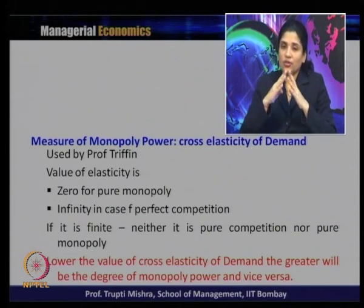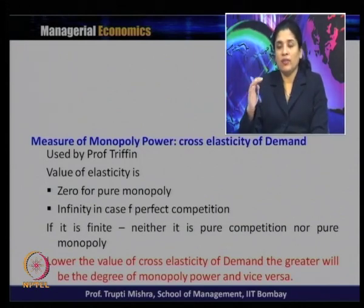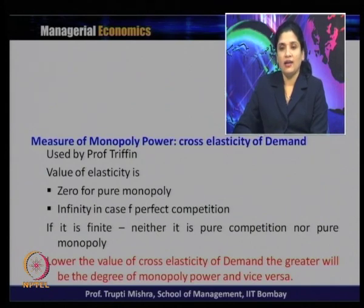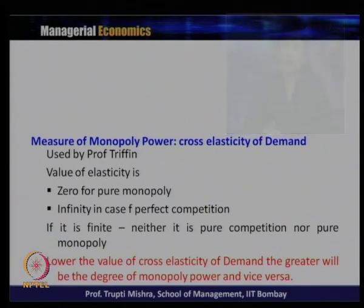With cross elasticity of demand: if it is 0, there is no close substitute at all — pure monopoly; if it is infinite, all products in the market are close substitutes — perfect competition. If it is finite, the market is between these two extremes. Lower the value of cross elasticity of demand, greater the degree of monopoly power, and vice versa.